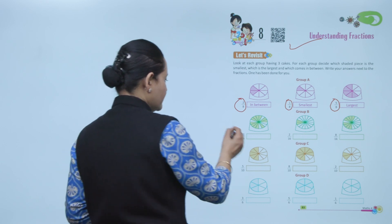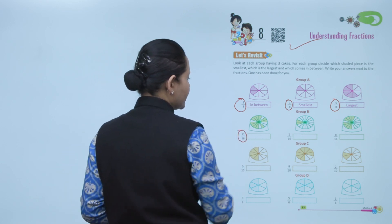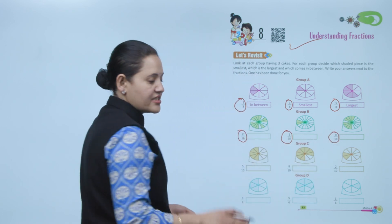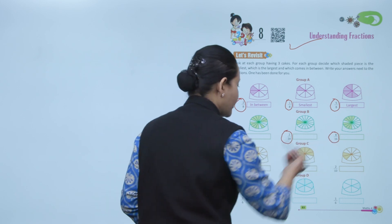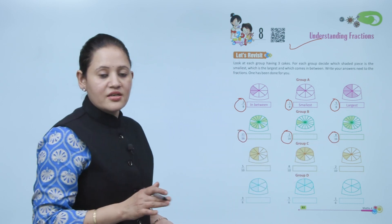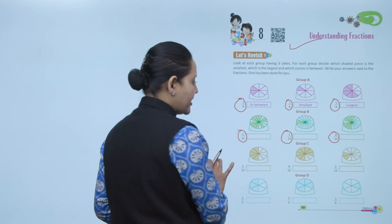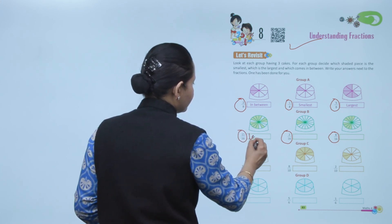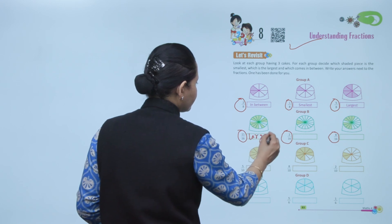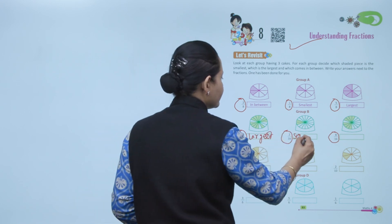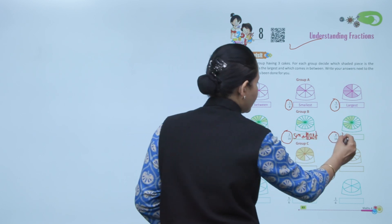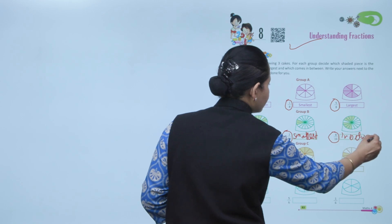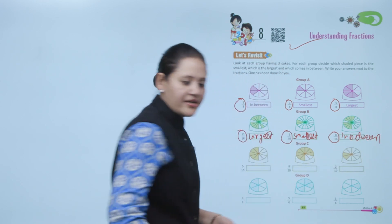Here the fractions are 11 upon 16, 2 upon 16, and 8 upon 16. In all the fractions the denominator is the same — 16. So the fraction with the greater numerator is the greatest. This is the largest, this is the smallest, and this is in between. This is how you can compare fractions.